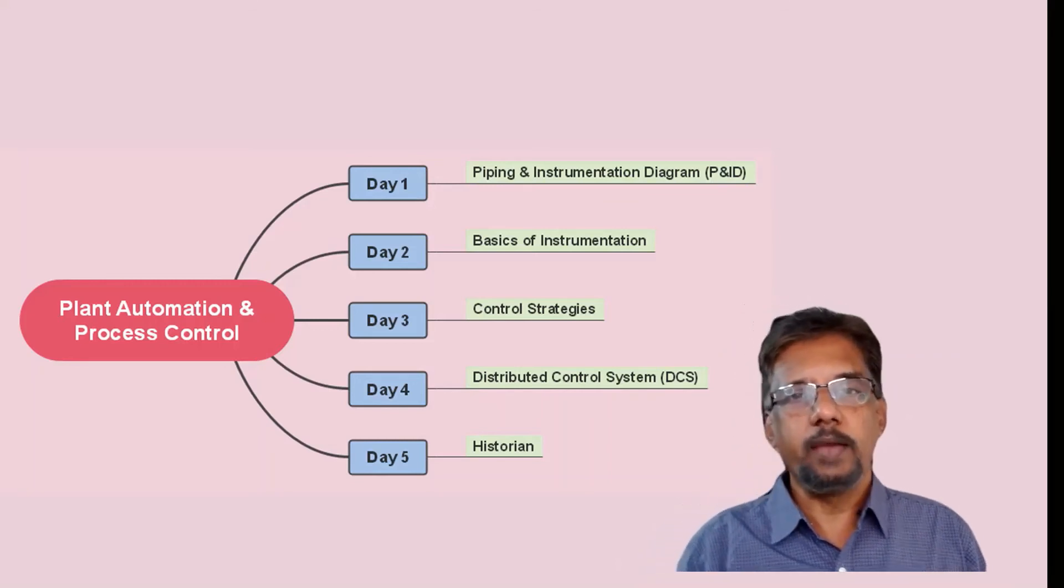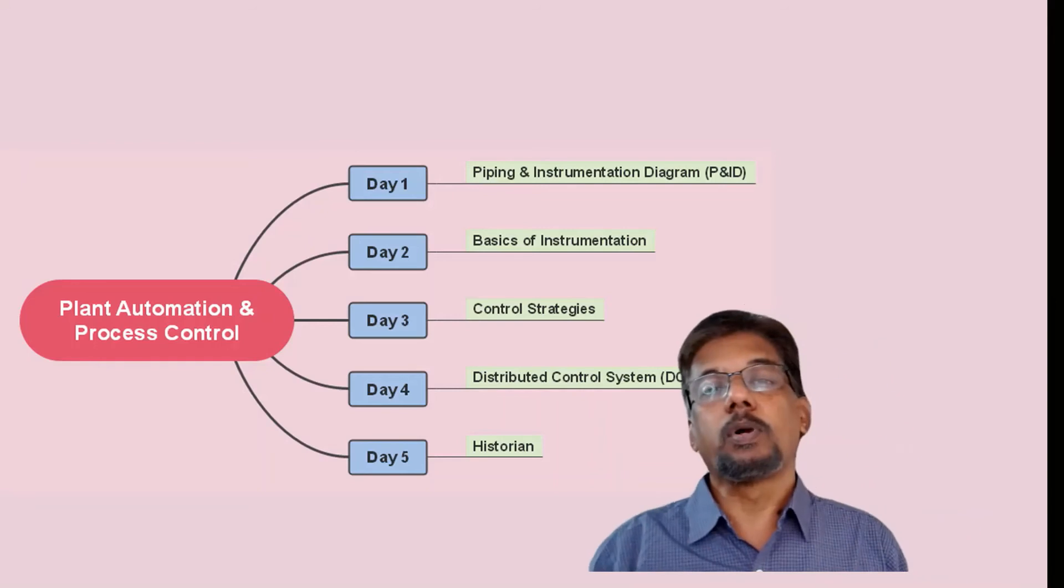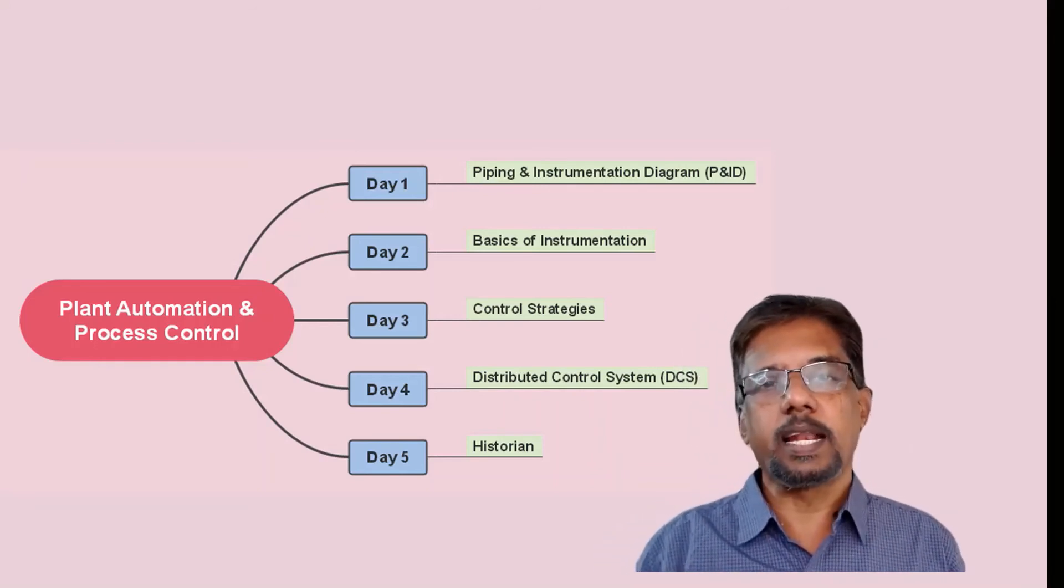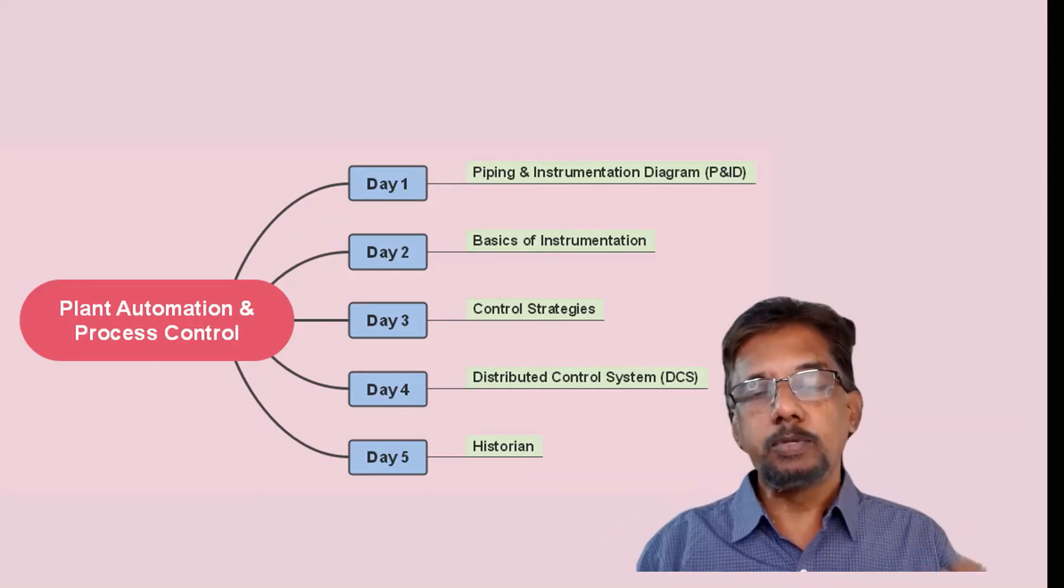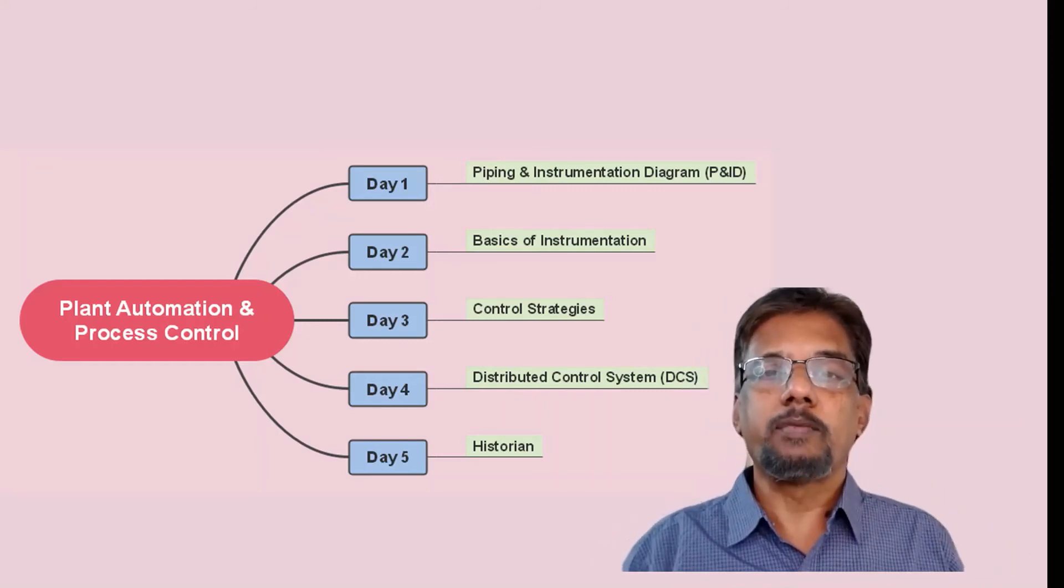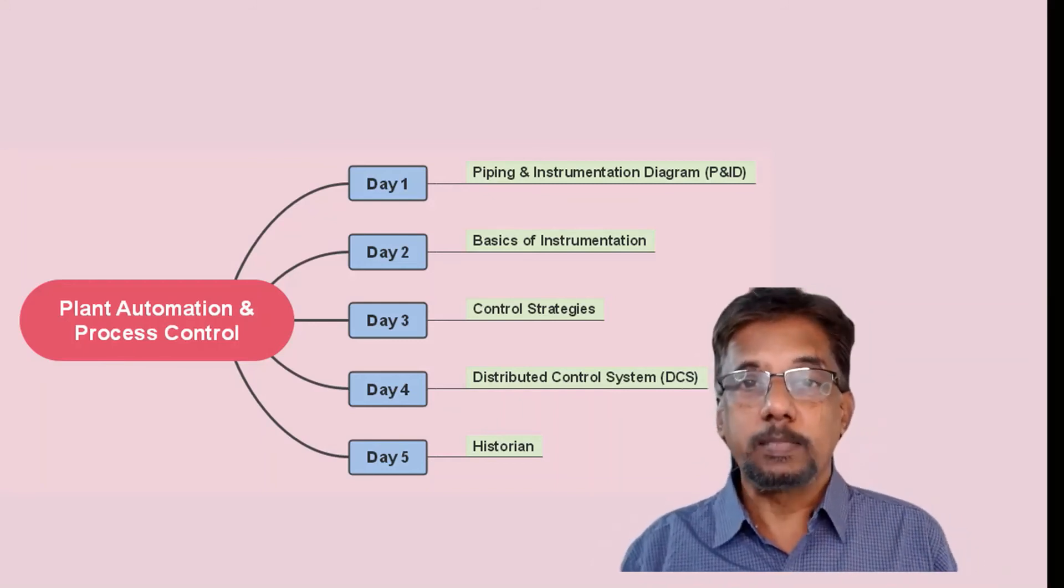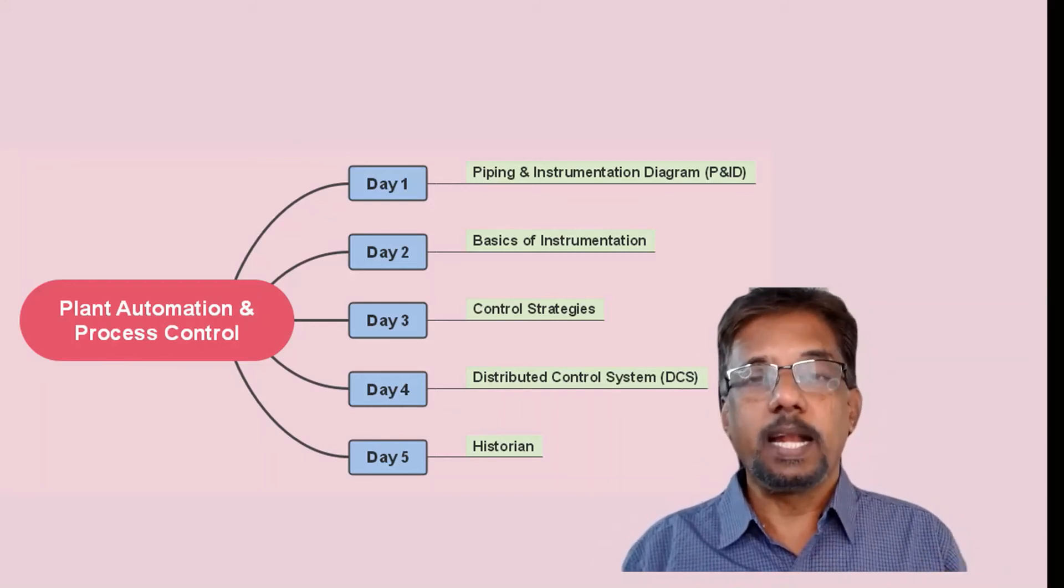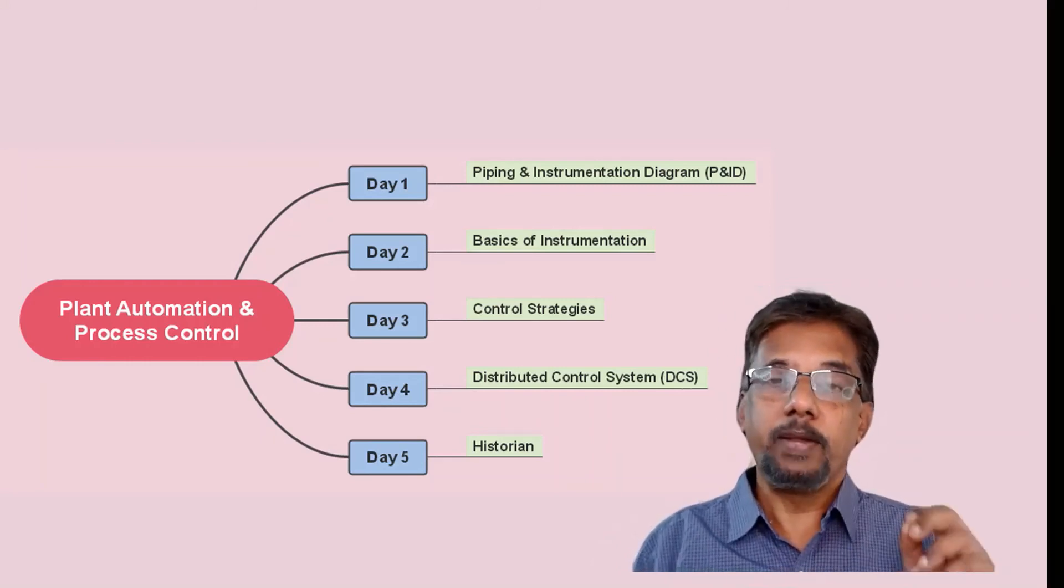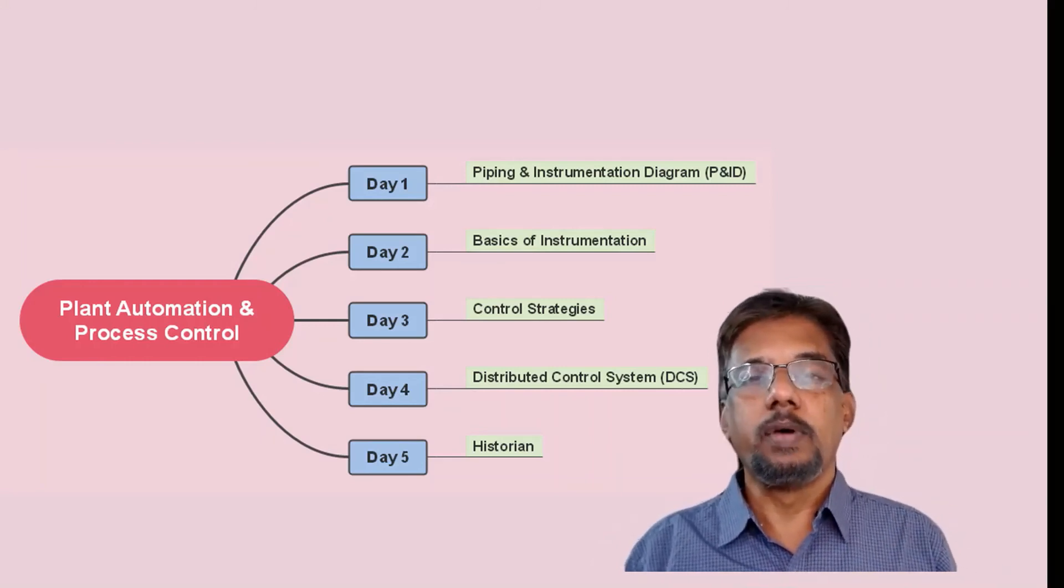On the last and concluding day we are going to talk in length about the process historian. Process historians are nothing but a real-time database that helps you to disseminate the real-time or near-real-time information from the control room to the different stakeholders known as process controlling process plant engineers or planning engineers. The benefits of historians we will be discussing.